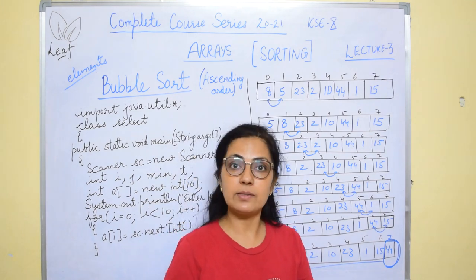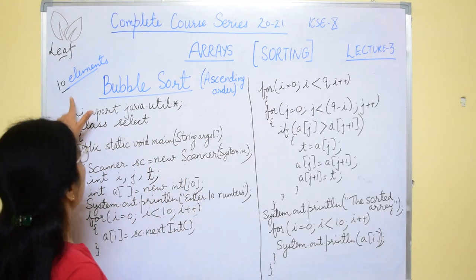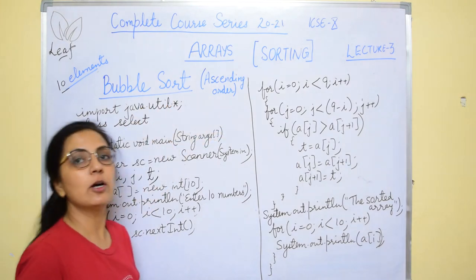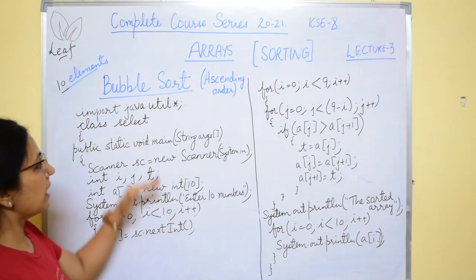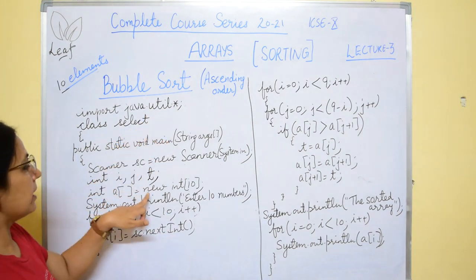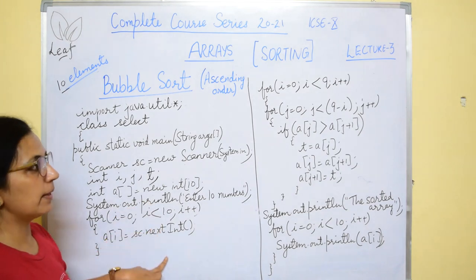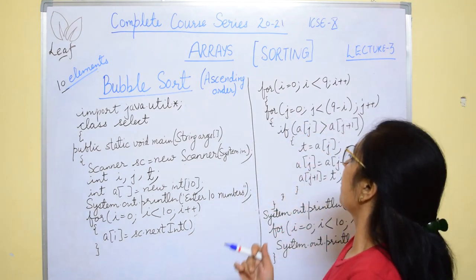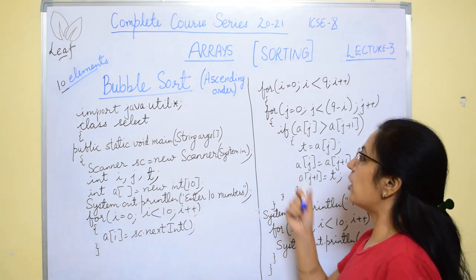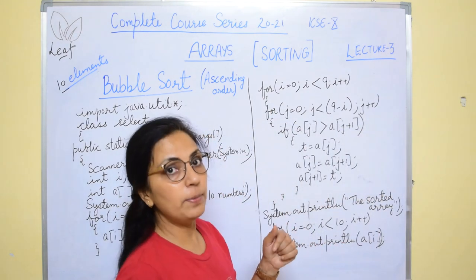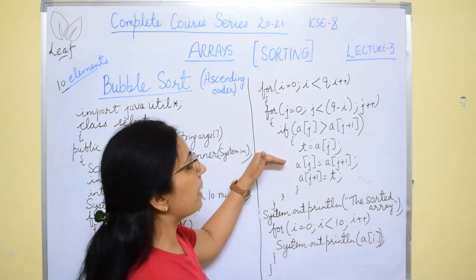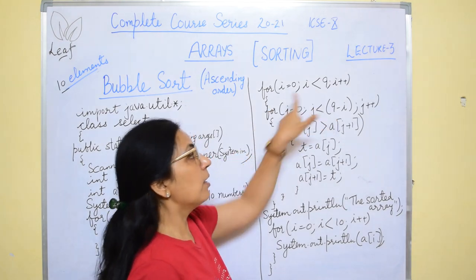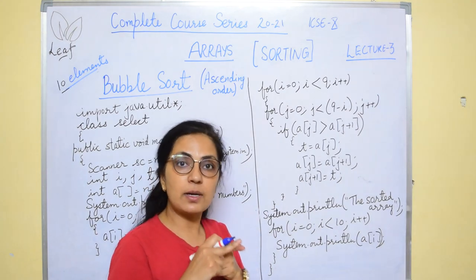Now we will see the programming statements for bubble sorting. We have to sort 10 numbers in ascending order using bubble sort technique. The input part remains the same: import the util package, declare the array, input the array elements — for entering array elements you can go to the first video of this topic and check. Now for the logic of the sorting, I have already written the program. I hope the logic is clear. Now see how we can write that in programming statements. For i equals 0, i less than 9.